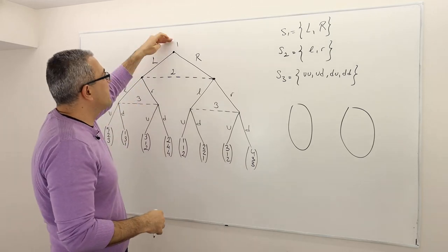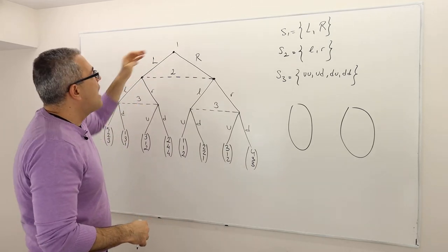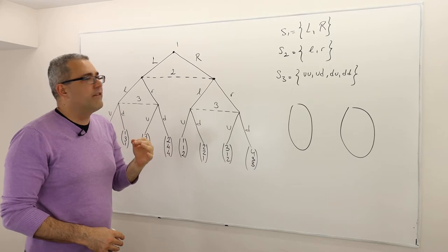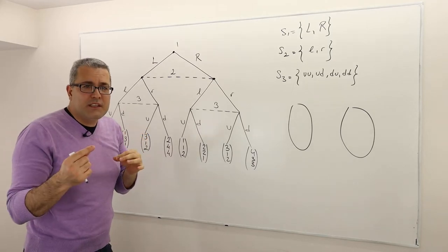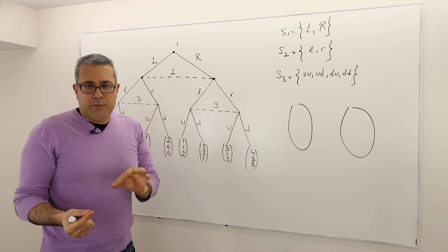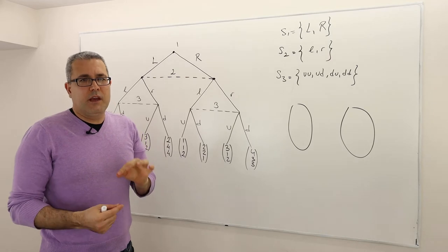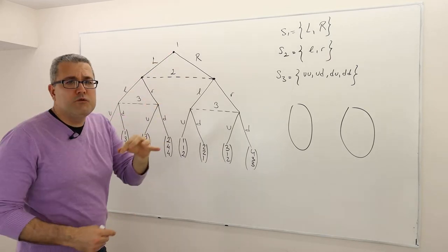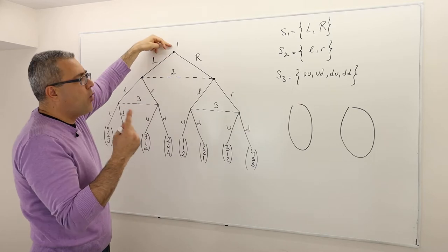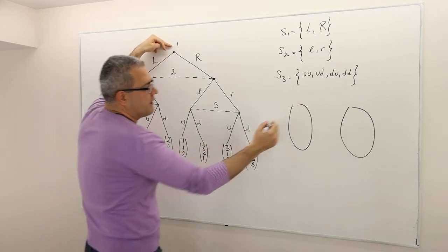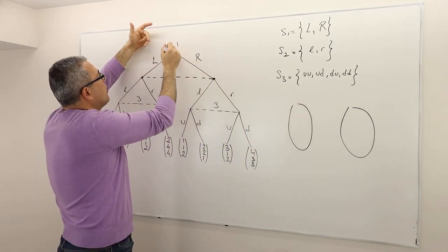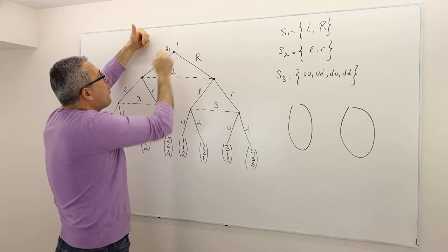For example, player one — how many information sets does he have? Remember, each decision node is also an information set. Player one moves in this game just once, so he has only one information set. I'm going to call this info set A1.